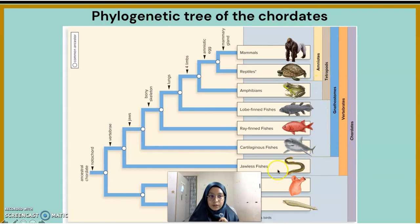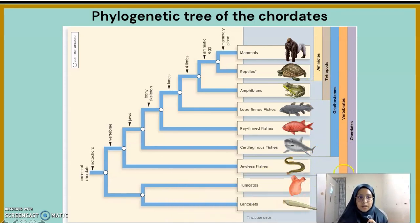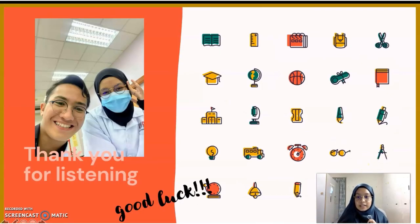The first vertebrates to live on land had evolved from these species by the Devonian period. That's all from both of us. We hope that you can understand and can answer all of the learning outcomes. Thank you.